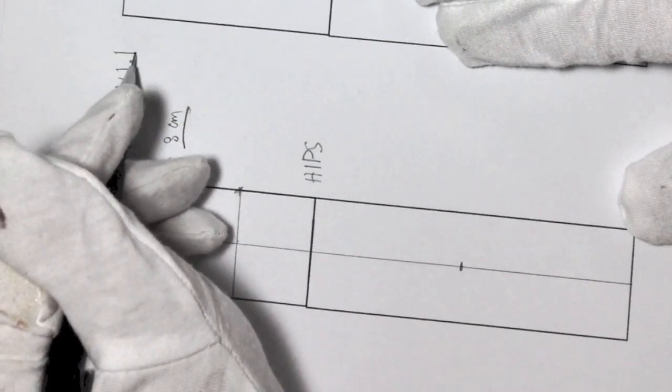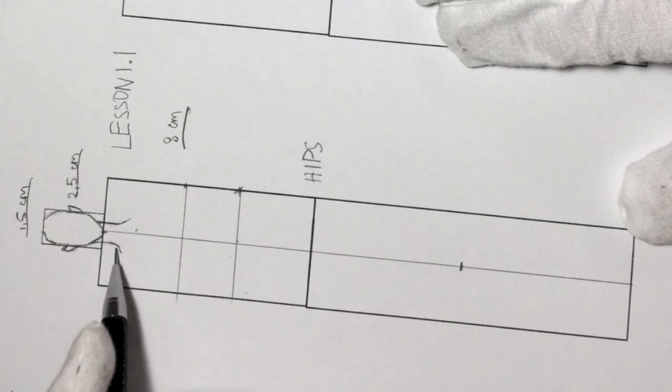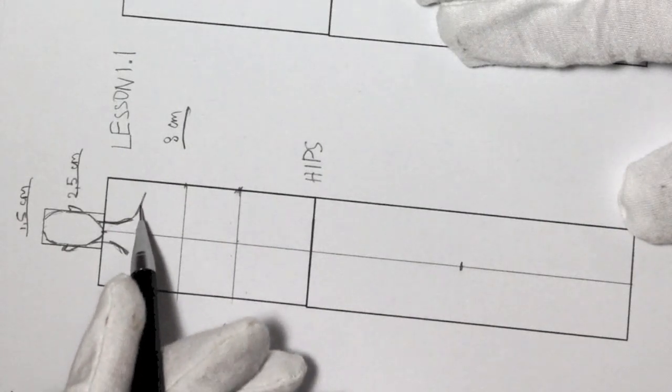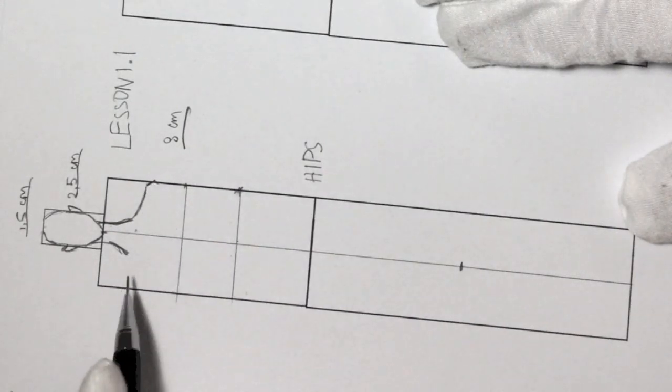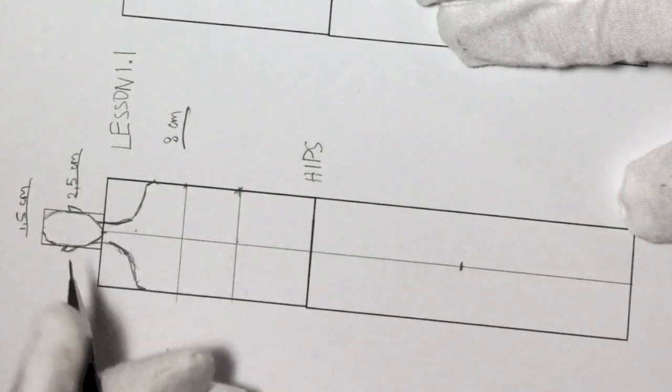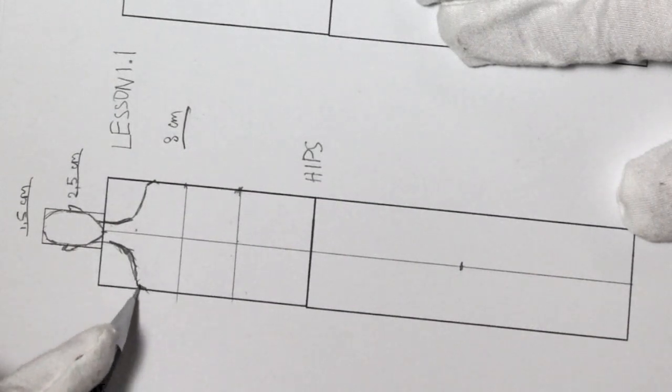And no, not lesson 1.1. 1.1 is a head and face, but check lesson 2.1. So now I'm just drawing following same rules as I described in that lesson with new lines for chest and waist.